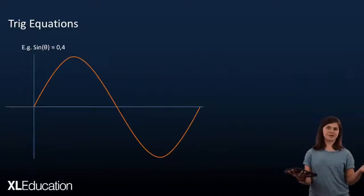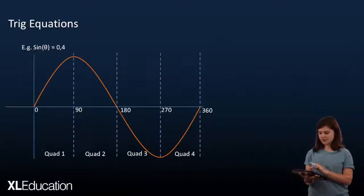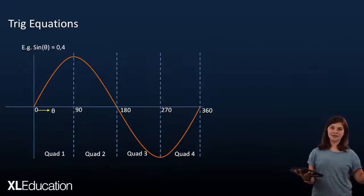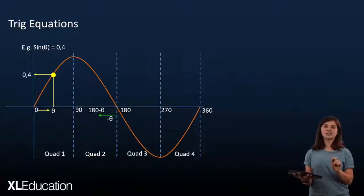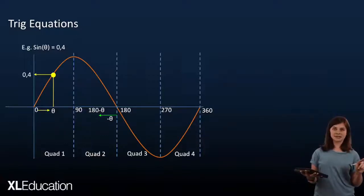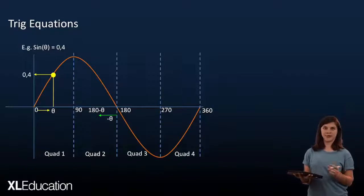For example, let's look at the sine graph. Here, we've got one revolution of our sine graph. When we go theta units into our function, we get a certain output. In this case, it's 0.4. Now, when we go 180 minus theta units, we're going to get that same output, 0.4.